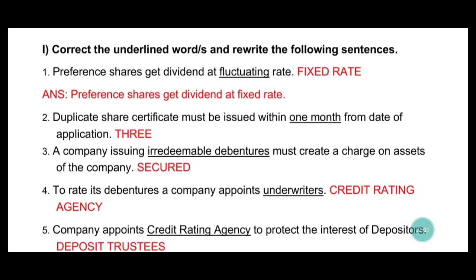Second one: duplicate share certificate must be issued within one month from the date of application. 'One month' is underlined. If you look at page number 53 in the textbook, duplicate share certificate is explained there. The answer: one month changes to three months.